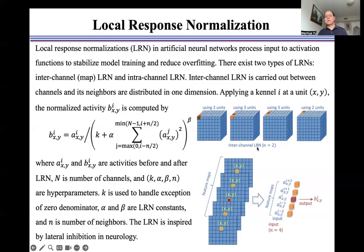For example, if N is 2, for the corner unit, we use 2 units to calculate the normalized activity B. Otherwise, we use 3 units to calculate the normalized activity B. If N is 4, we use 5 units to calculate the normalized activity B. The local response normalization is inspired by lateral inhibition in neurology.